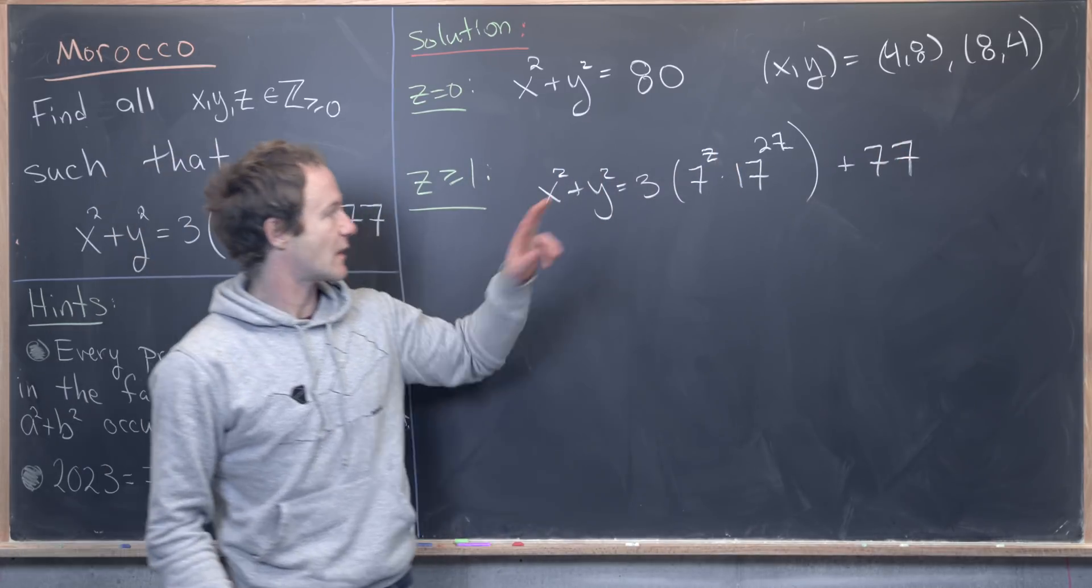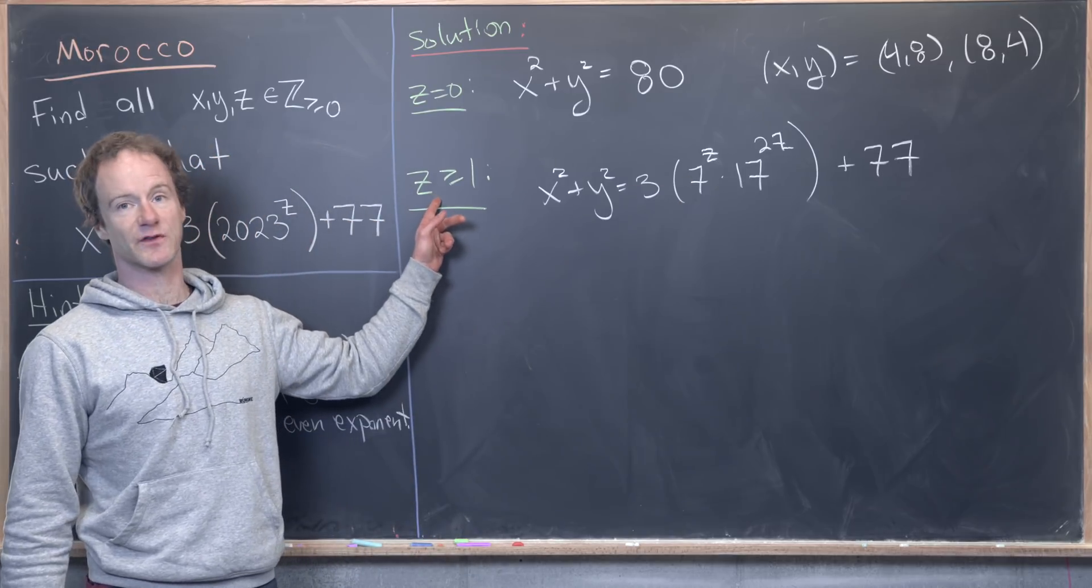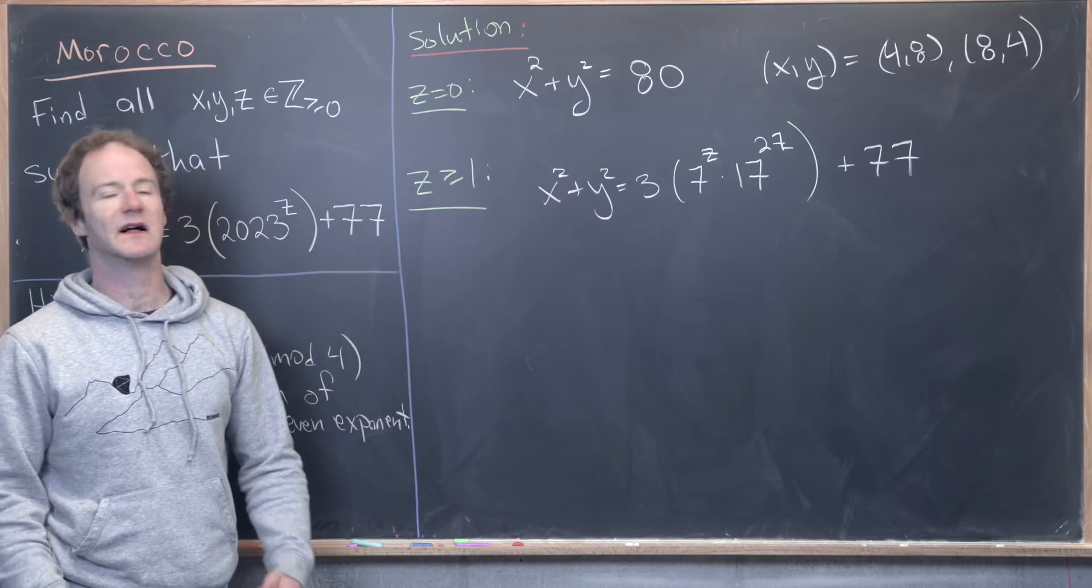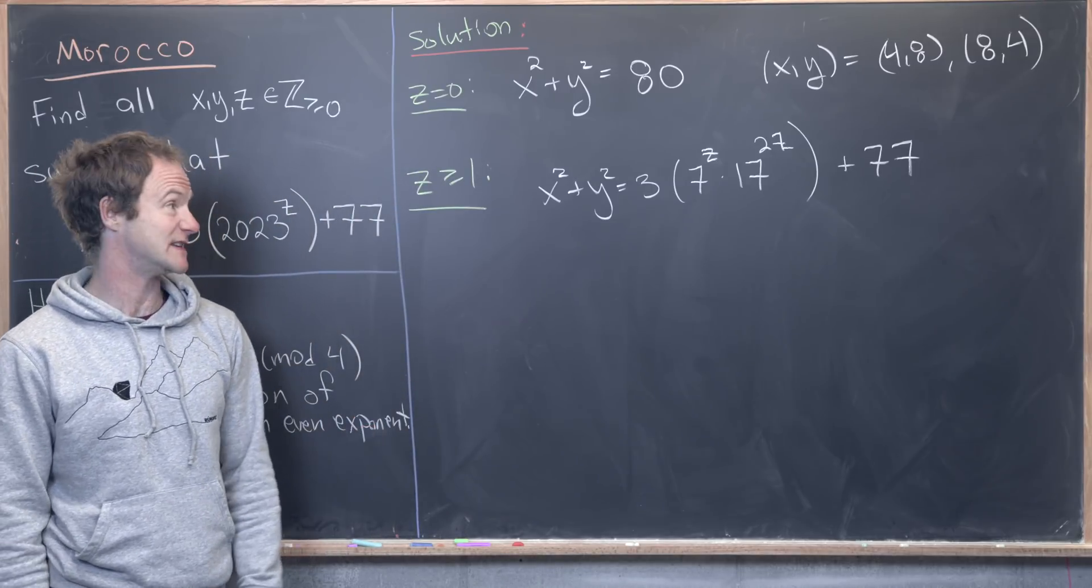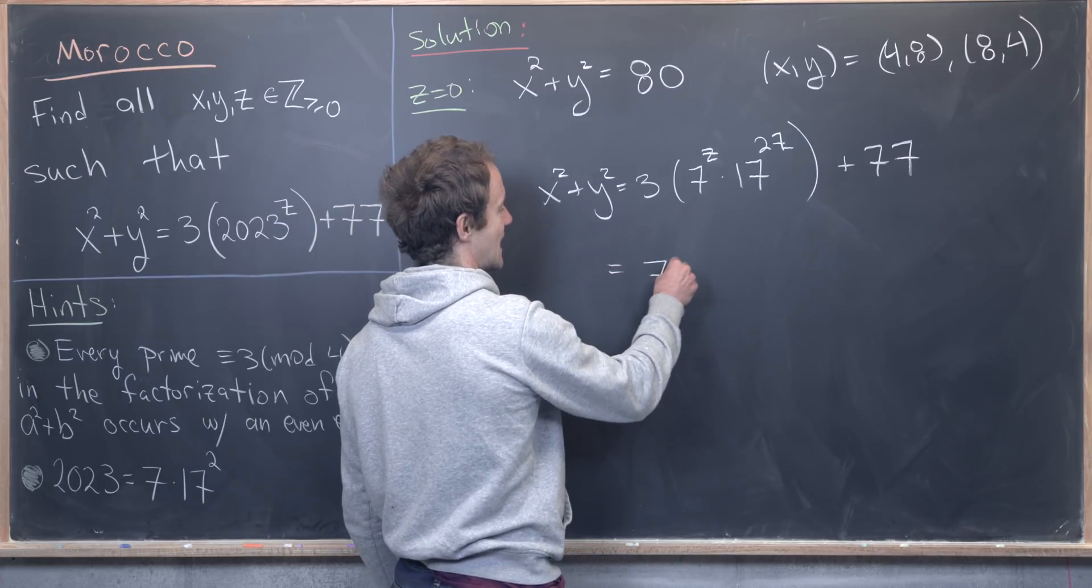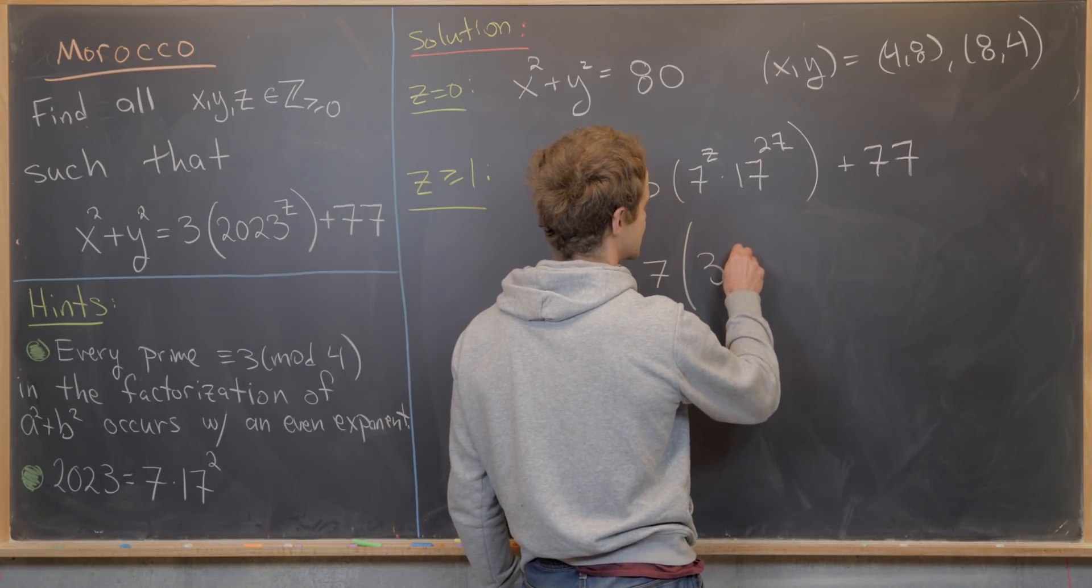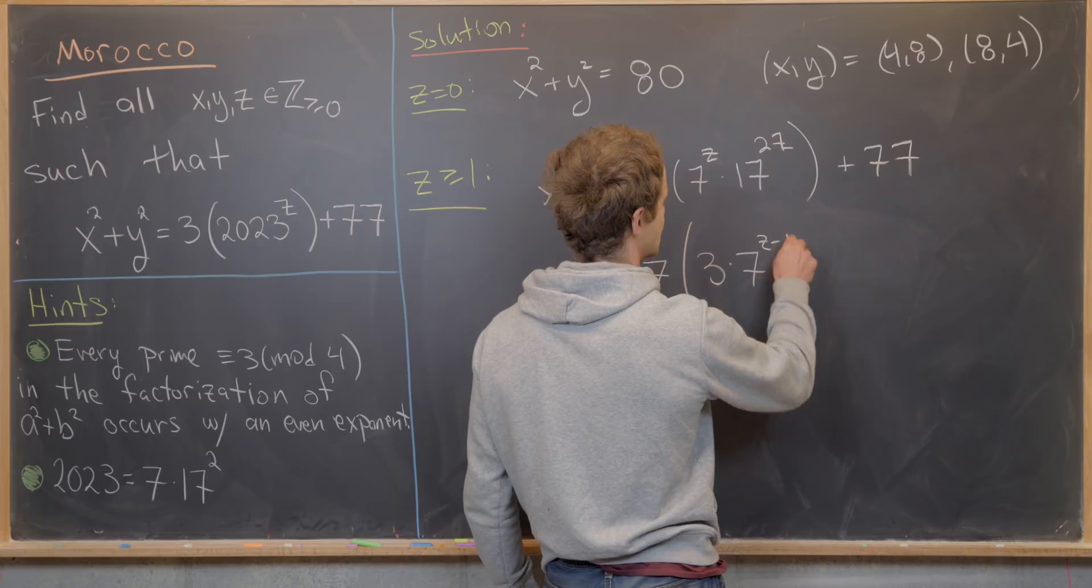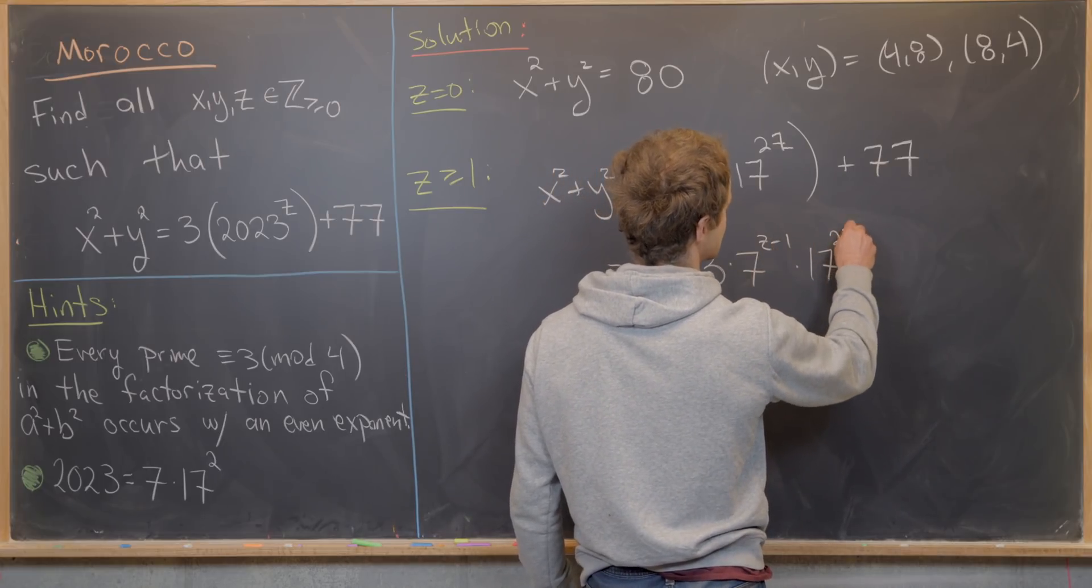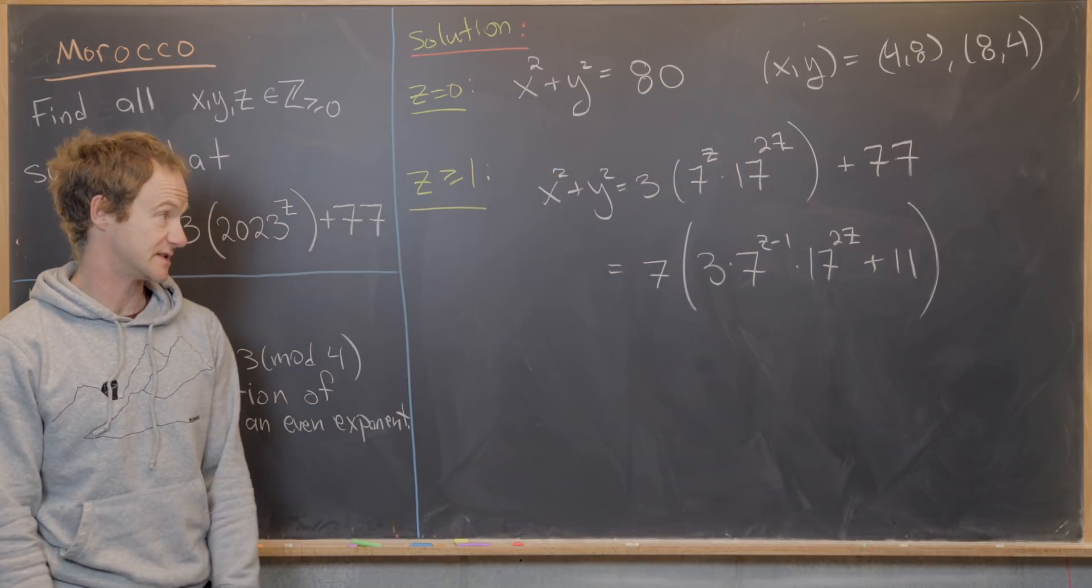Okay, so we see that we can factor a 7 out of this term, given that z is bigger than or equal to 1. And we can factor a 7 out of this term as well. Again, that's because 77 is 7 times 11. So we can go ahead and write this as 7 times, and then left over we'll have 3 times 7 to the z minus 1 times 17 to the 2z plus 11, given the fact that 77 is 7 times 11.